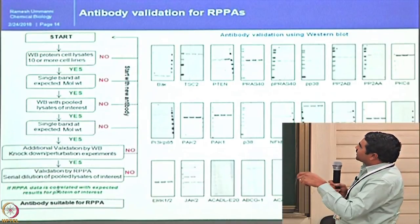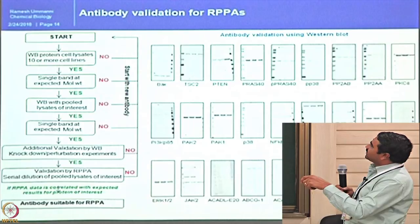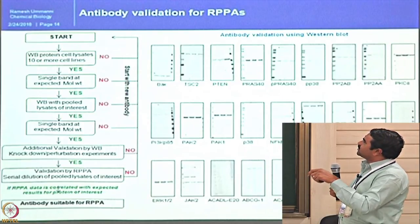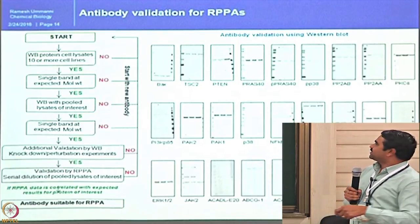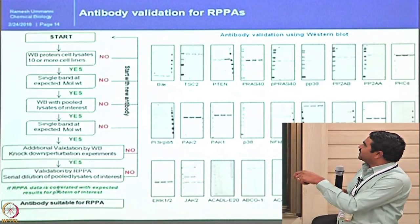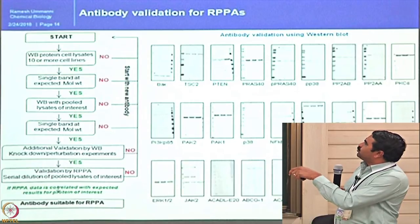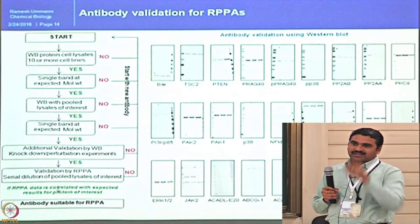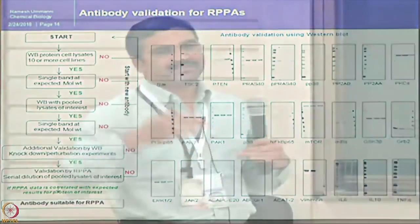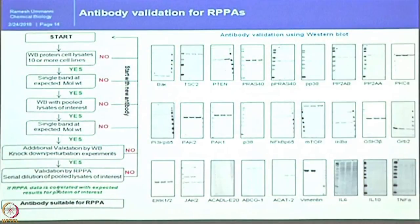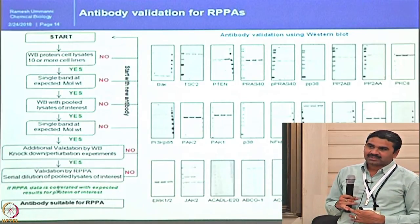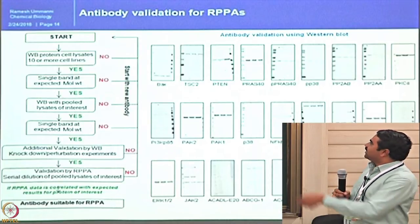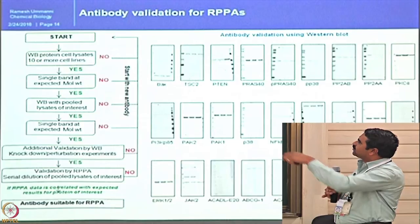The approach for antibody validation starts with western blotting: take ten or more different cell lysates, run them on a western blot. If the antibody gives a single band, proceed to the next step — pool lysates from ten or more cell lines into a single lane to confirm that in a complex mixture the antibody can recognize the protein of interest without non-specificity. If it gives a single band, proceed to additional validation by knockdown and stimulation experiments, and then to RPPA validation.